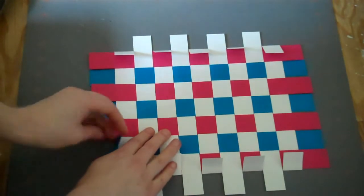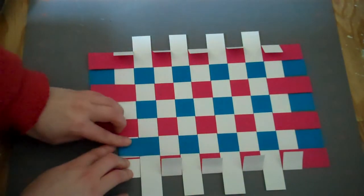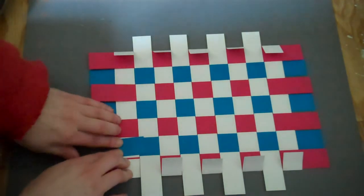Then do the same thing with all the colored strips, taking the under strips and folding them back against the white.